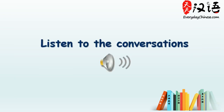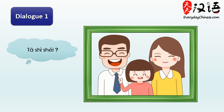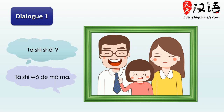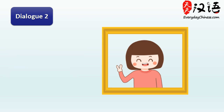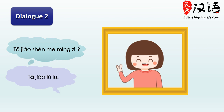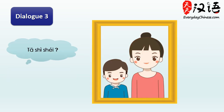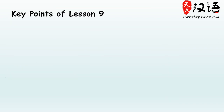Now, listen to the conversations one more time. 她是谁? 她是我的爸爸。 她是谁? 她是我的妈妈。 她是谁? 她是我的女儿。 她叫什么名字? 他叫露露。 他是谁? 他是我的老婆。 他是谁? 他是我的儿子。 Did you get it?